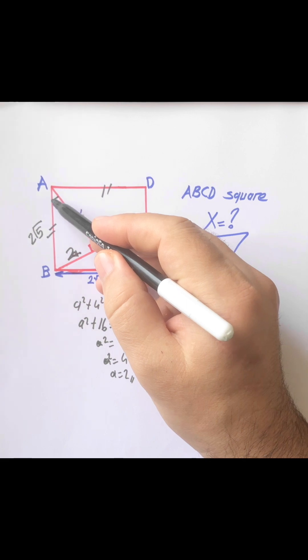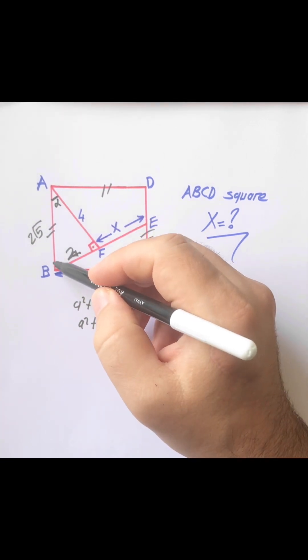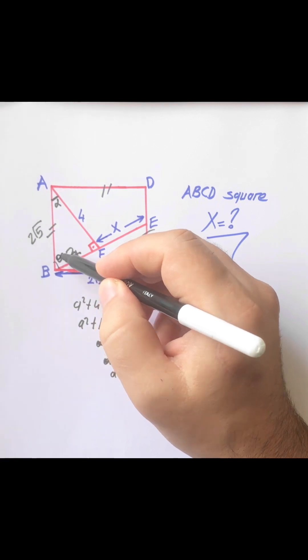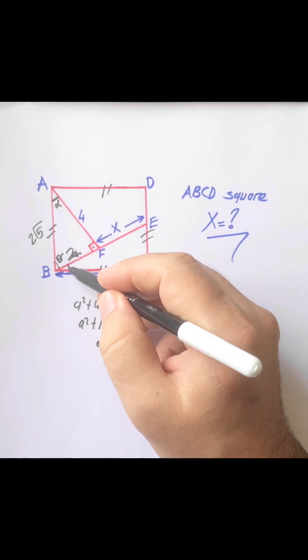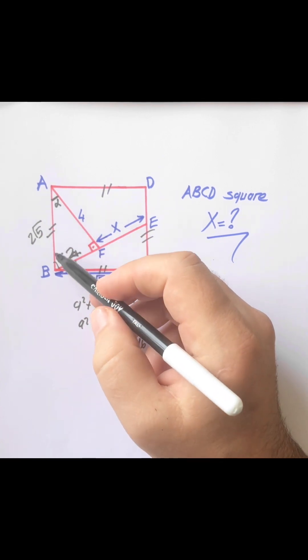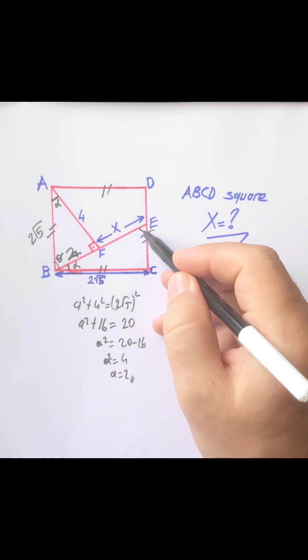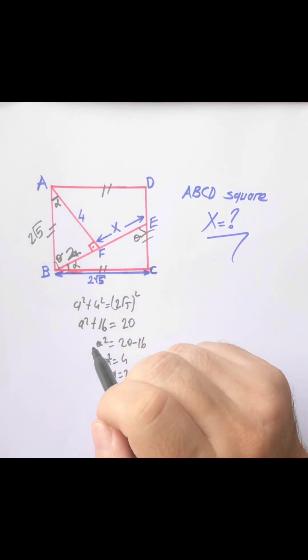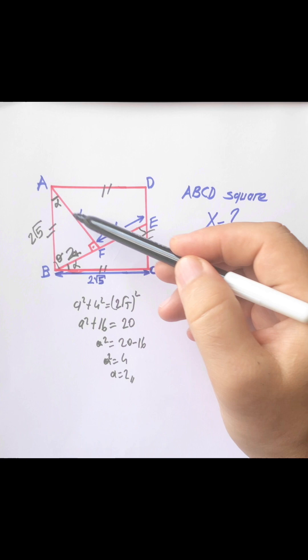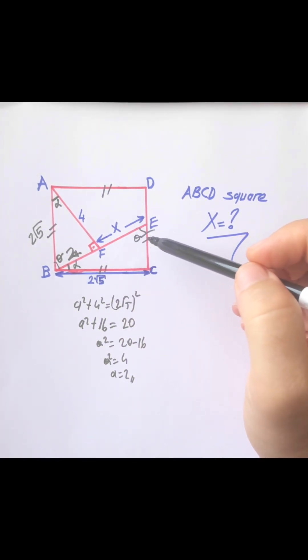In triangle BAF, I'll call this angle alpha degrees, and here we have theta degrees. Since alpha plus beta equals 90 degrees, this angle is theta. Triangles ABF and BEC are similar because all their angles are the same.